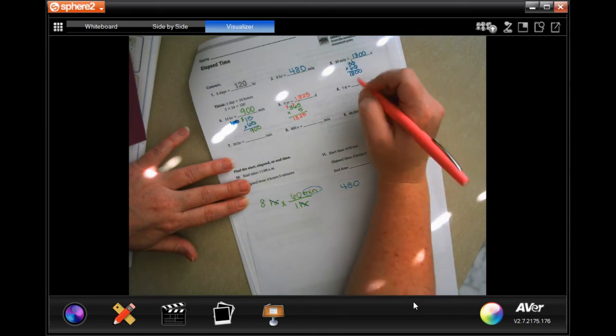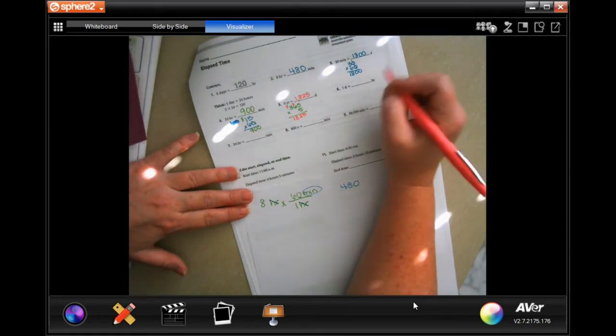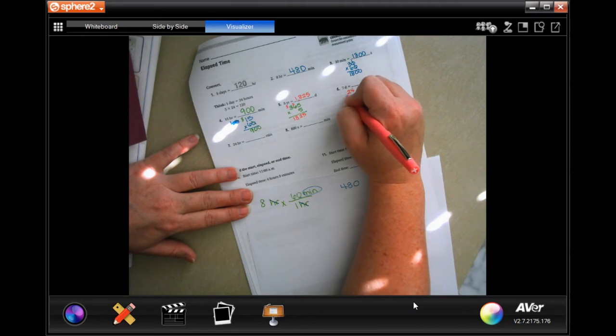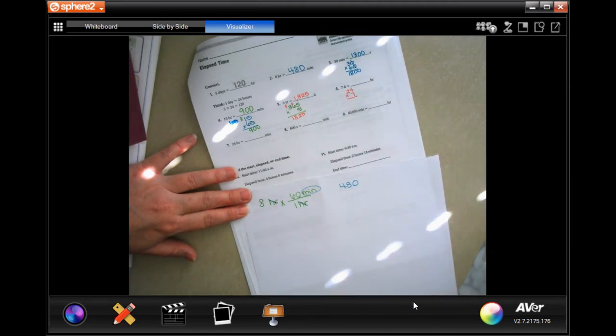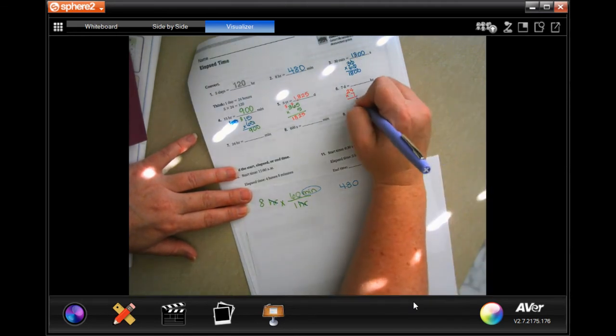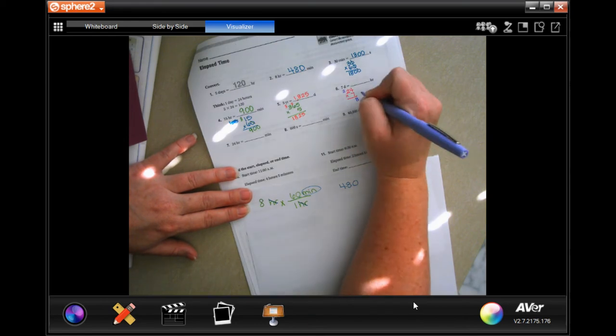7 days is how many hours? Well there is 24 hours in one day and they want to know about seven. 7 times 4 is 28, carry the 2. 7 times 2 is 14 plus 2 is 16. 168 hours.